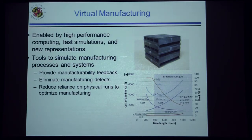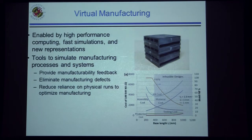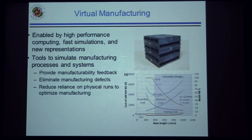Information technology has enabled virtual manufacturing, meaning you can simulate the entire manufacturing process inside the computer without having to physically test out your ideas or produce anything. This has had a significant impact because now you can get instantaneous manufacturability feedback. You can run software, simulate the manufacturing process, and determine if you're going to have any manufacturability problems. You can fix problems in the computer rather than creating a part and discarding it, eliminating manufacturing defects. You can also use a simulation model to optimize the manufacturing process.